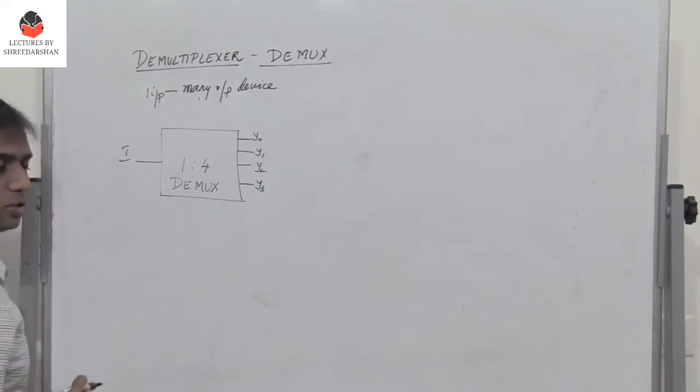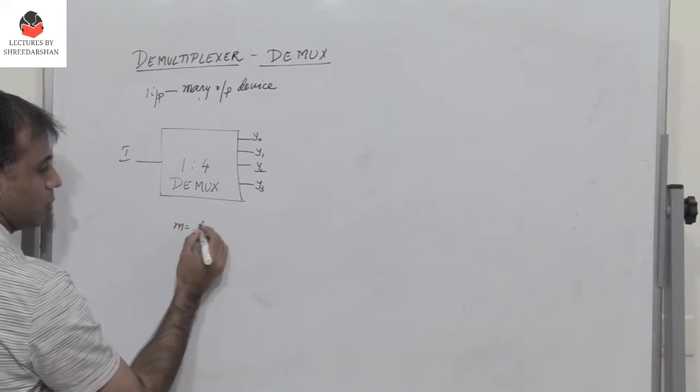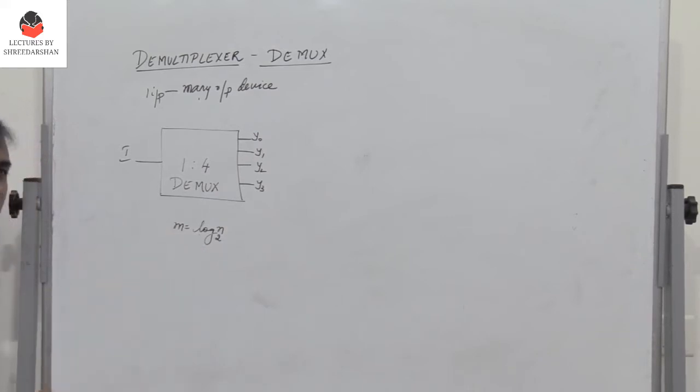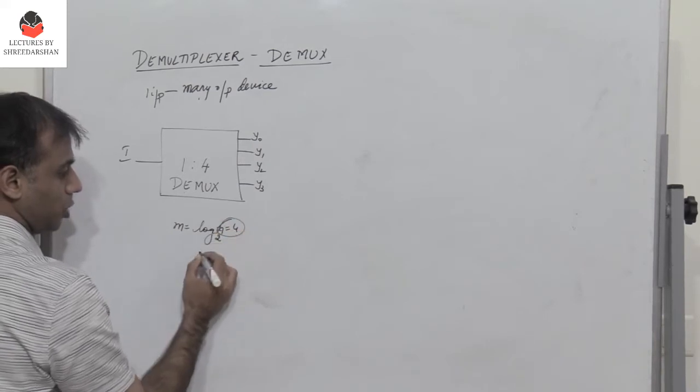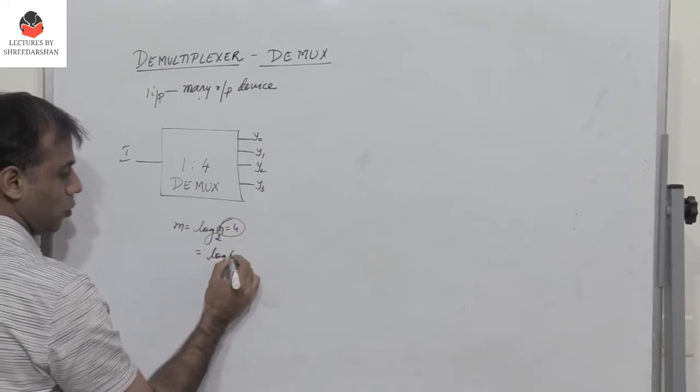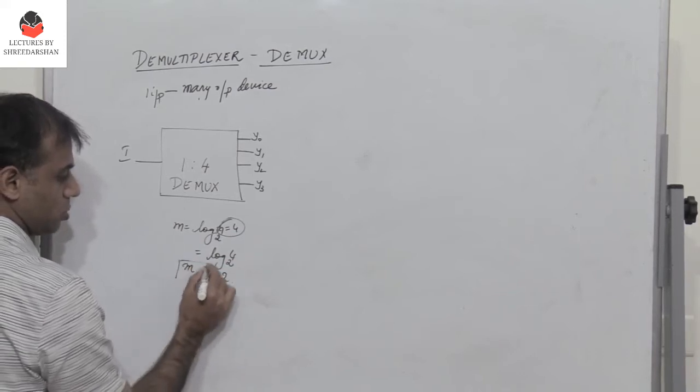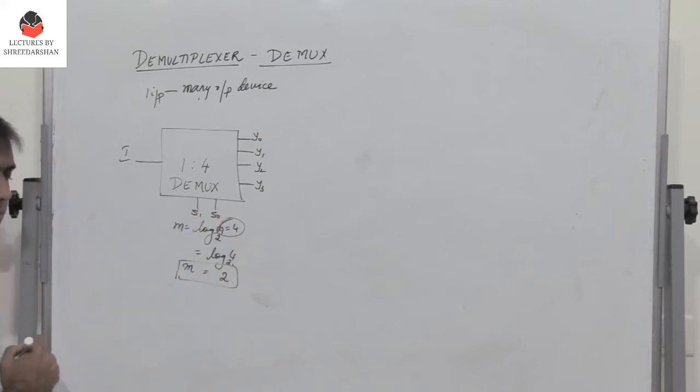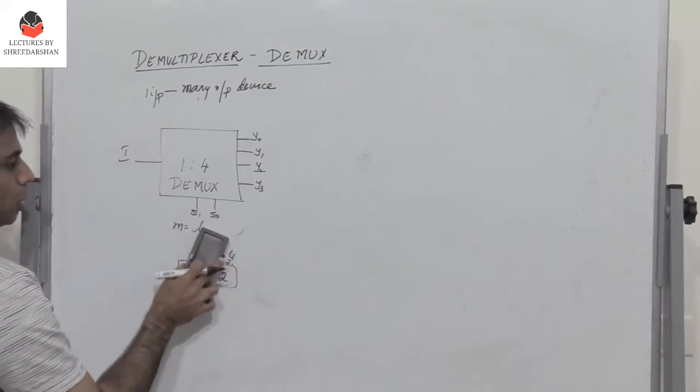Now how many select lines do we need? Therefore we know that n equals log N to base 2, where N is the number of outputs and n is the number of select lines. So since N is 4, I have log 4 to base 2 which is 2. So n equals 2. We need two select lines, s1 and s0, to select the input to the 4 outputs.